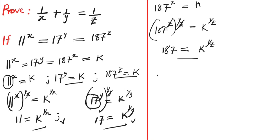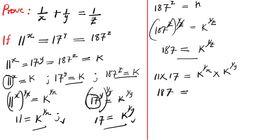The next step is to multiply 11 and 17 together. We have 11 times 17 equals k power 1 over x times k power 1 over y. Since 11 times 17 is 187, and when multiplying same bases we add the exponents, this gives us 187 equals k power 1 over x plus 1 over y.